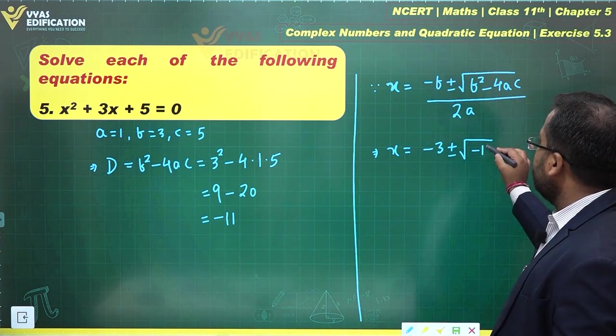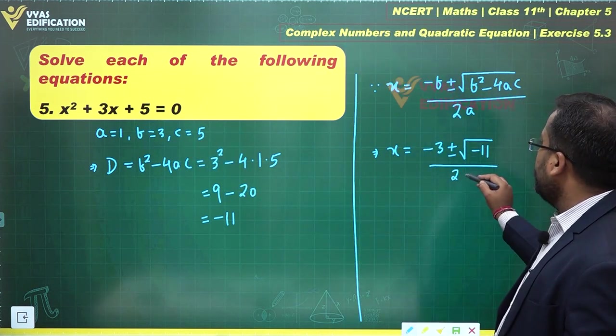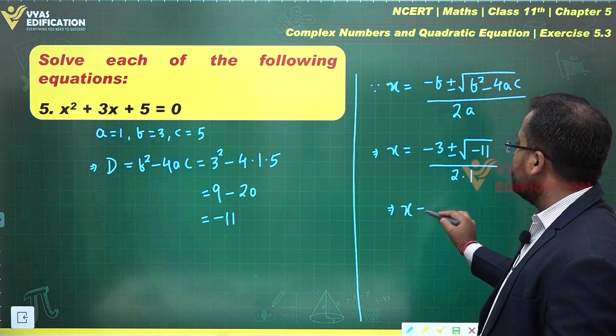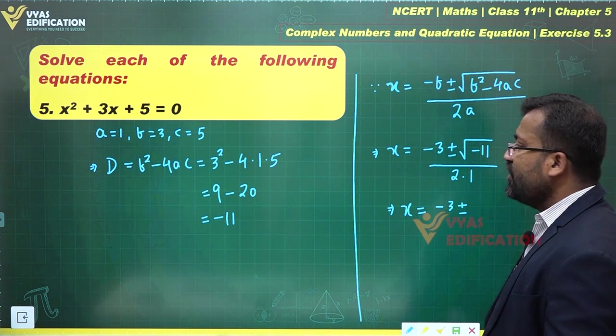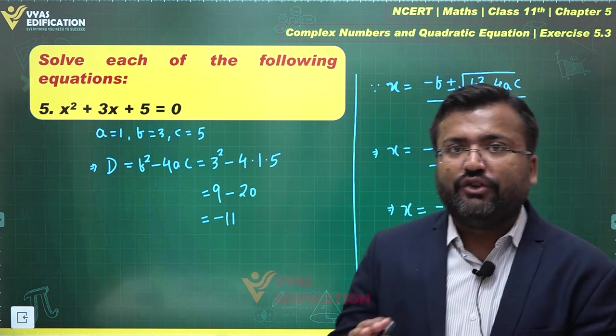Which is 2 times 1. Or we can say that x equals minus 3 plus or minus root of minus 11, which can be broken down into two parts: root 11 into root of minus 1.